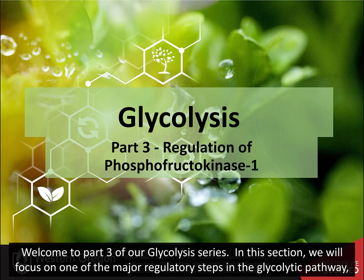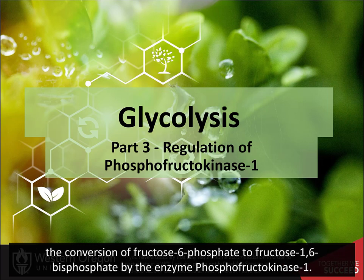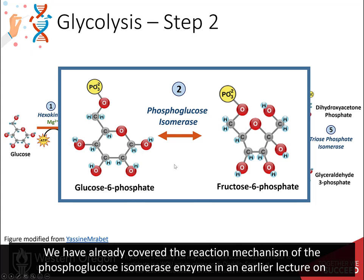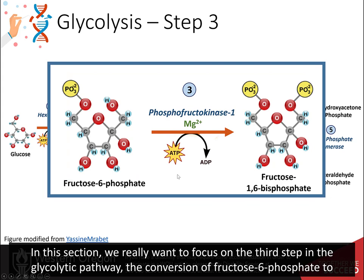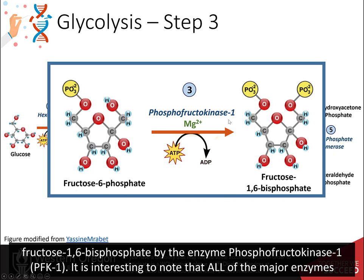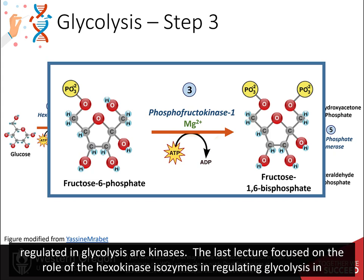Welcome to part 3 of our glycolysis series. In this section, we will focus on one of the major regulatory steps in the glycolytic pathway: the conversion of fructose 6-phosphate to fructose 1,6-bisphosphate by the enzyme phosphofructokinase 1. We have already covered the reaction mechanism of the phosphoglucose isomerase enzyme in an earlier lecture on carbohydrate structure. Please refer back to that video tutorial for details about the isomerase mechanism. In this section, we really want to focus on the third step in the glycolytic pathway, the conversion of fructose 6-phosphate to fructose 1,6-bisphosphate by PFK1. It is interesting to note that all of the major enzymes regulated in glycolysis are kinases.